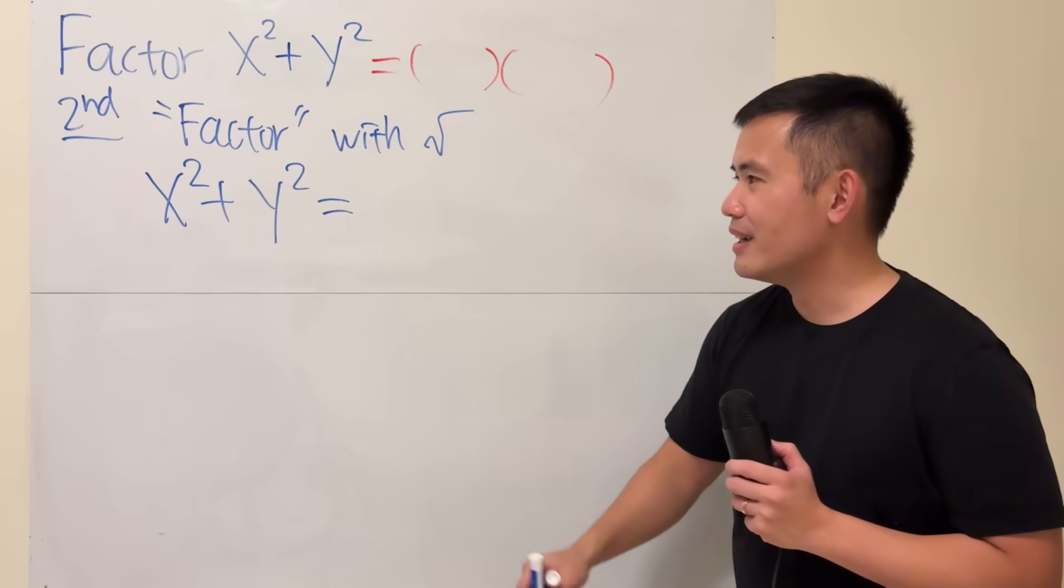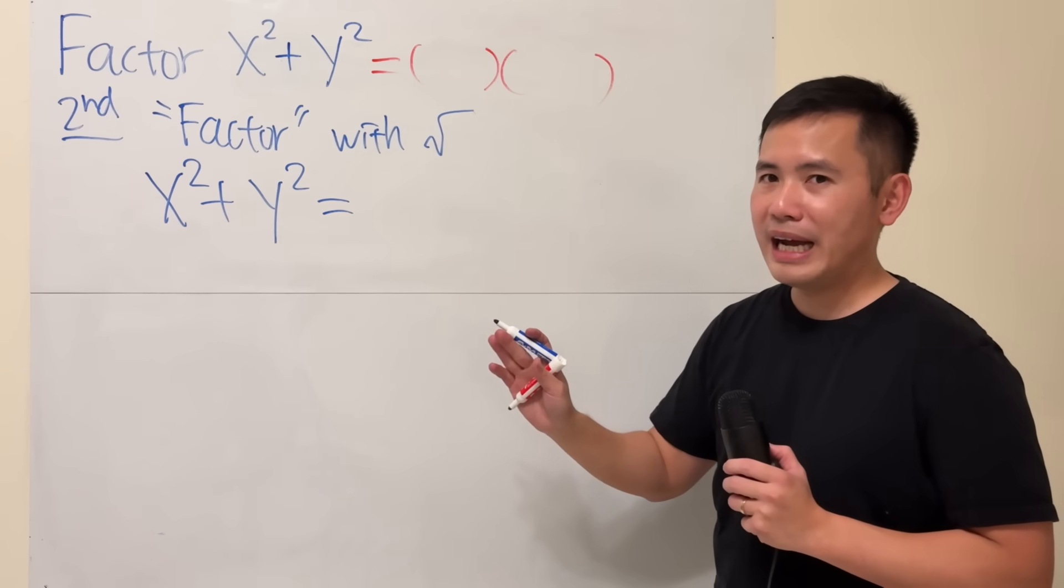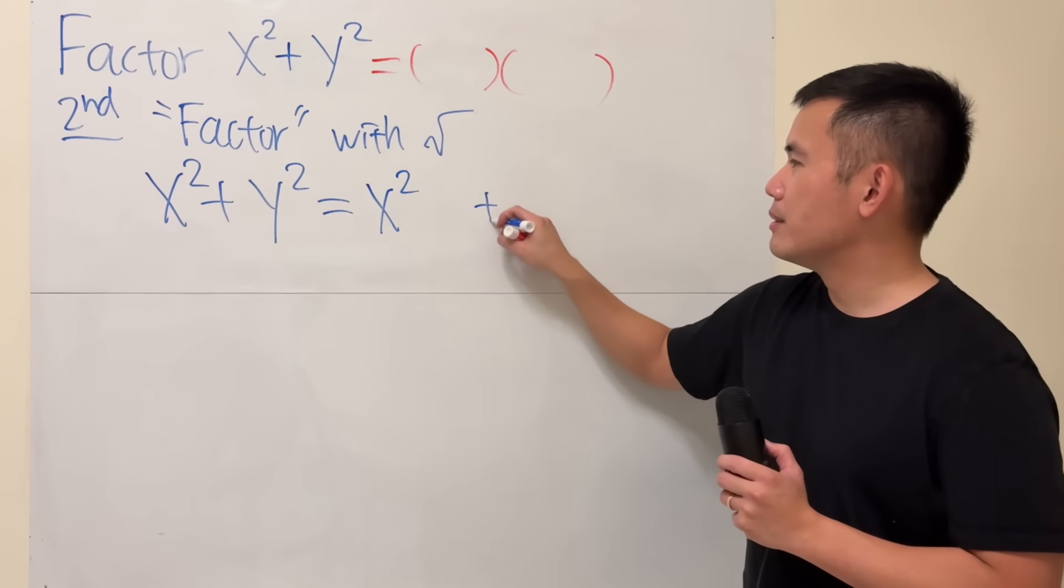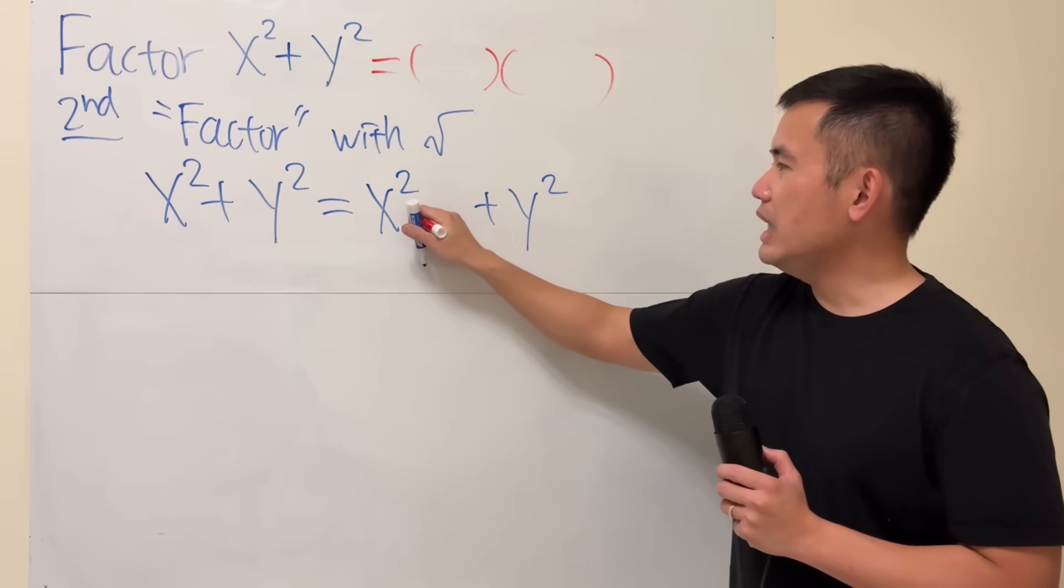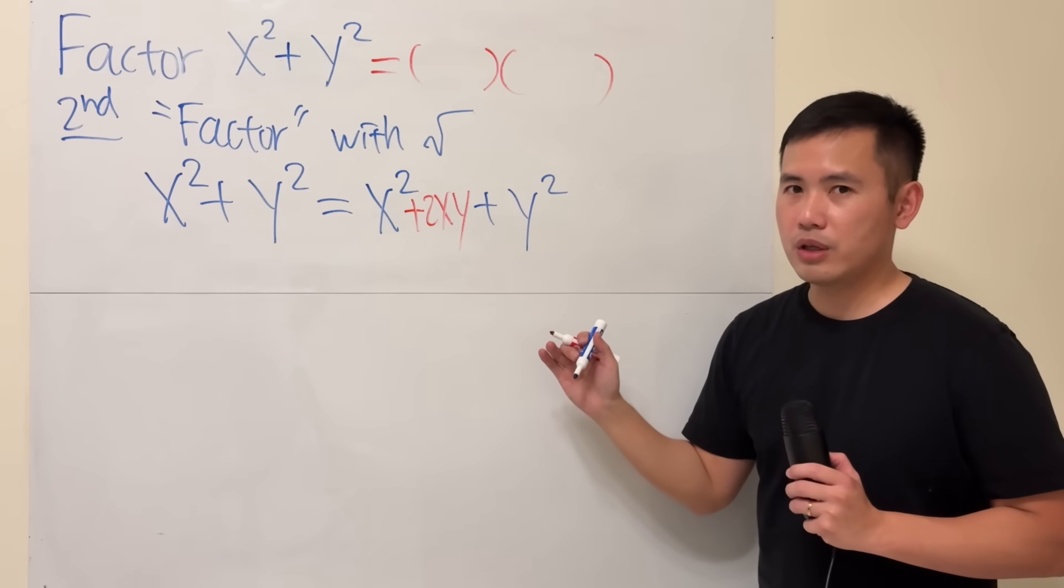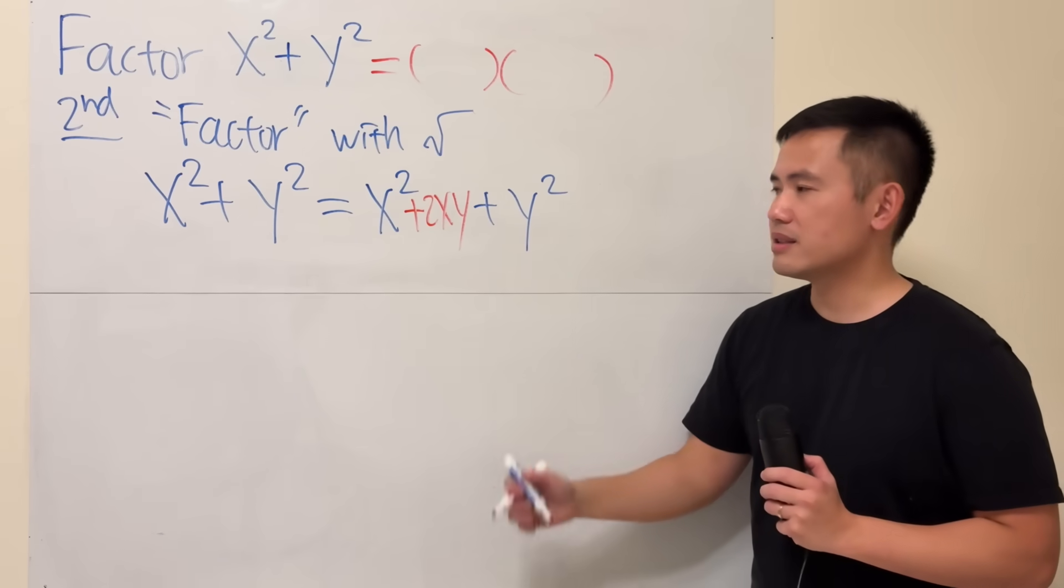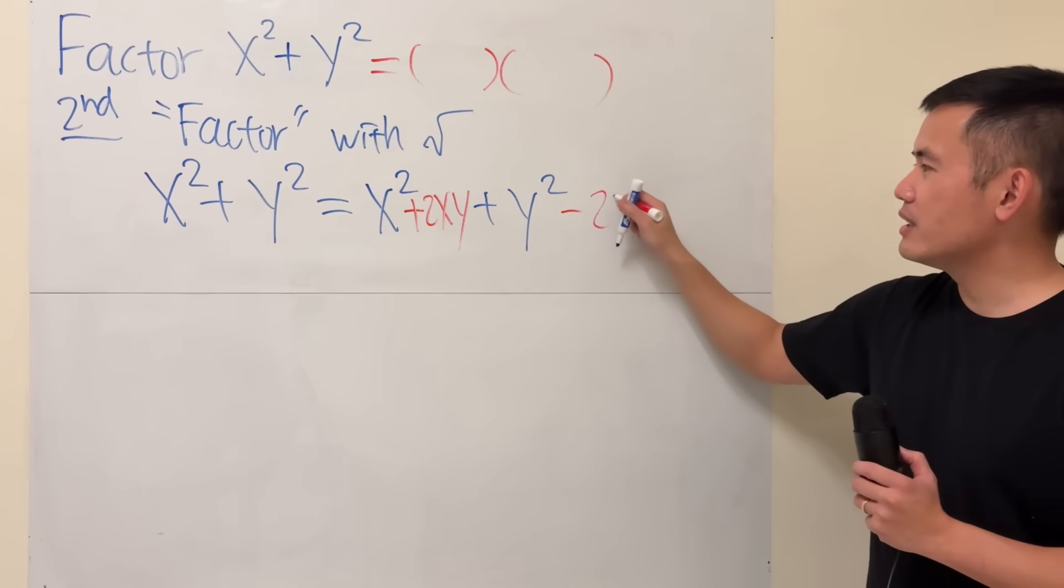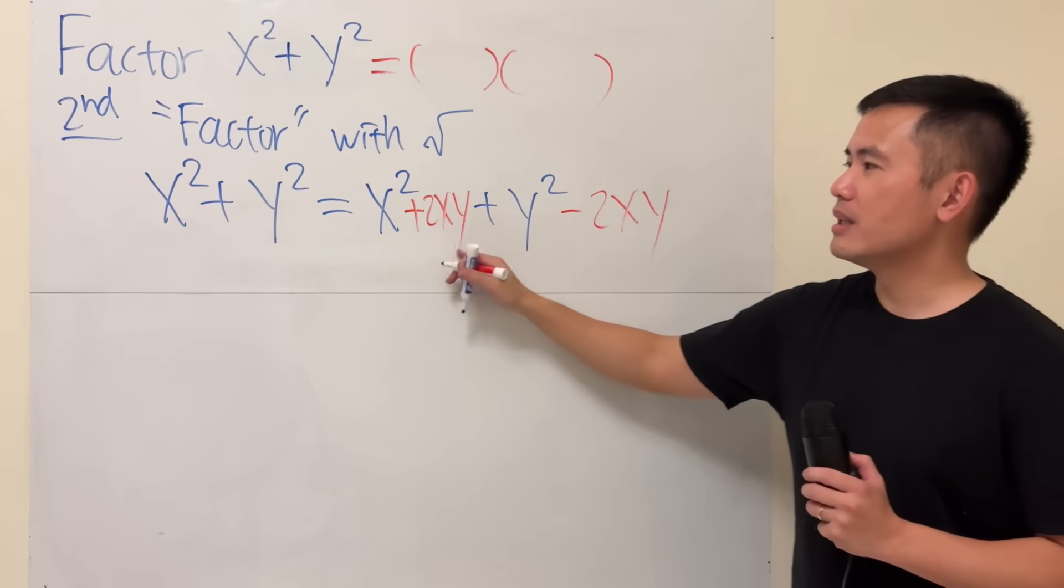In the middle, I'm going to add, well, let's think about it. x squared plus y squared. If we have 2xy, then this is just a regular trinomial that we can factor. But of course, once we added this, we will have to subtract it right here, so that they are still equal.